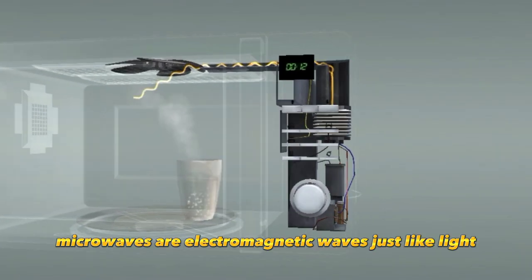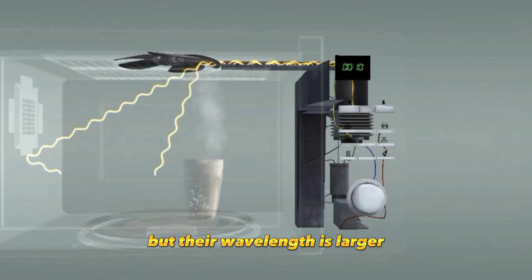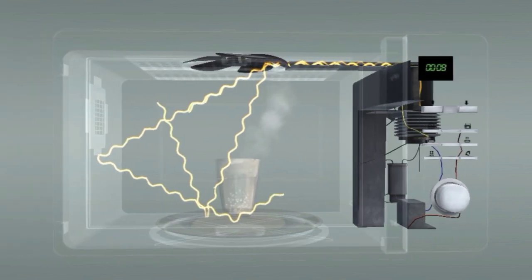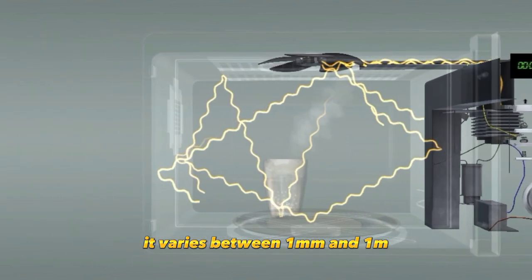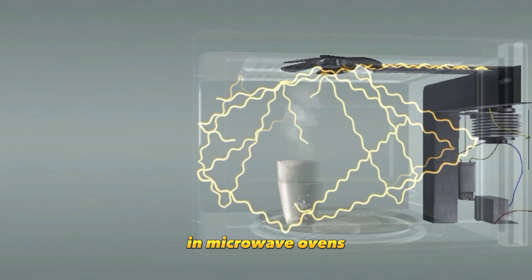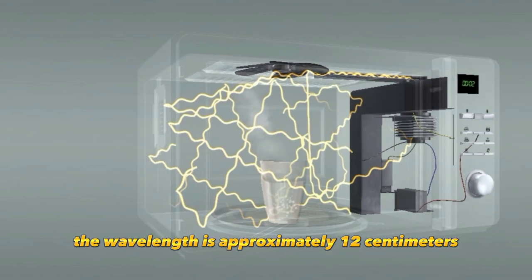Microwaves are electromagnetic waves, just like light, but their wavelength is larger. It varies between 1 mm and 1 m. In microwave ovens, the wavelength is approximately 12 cm.